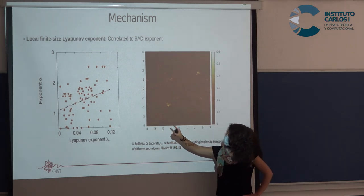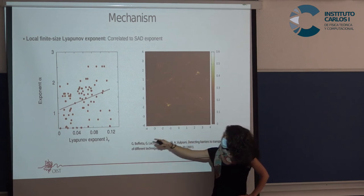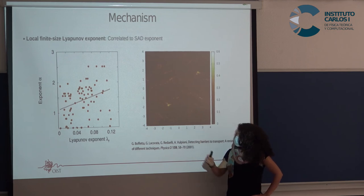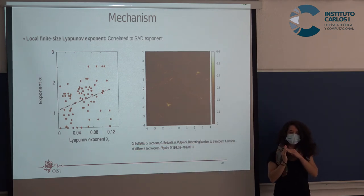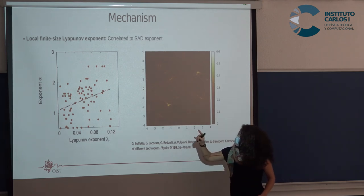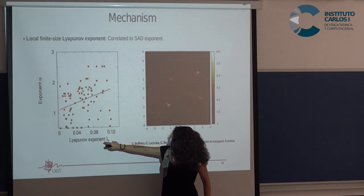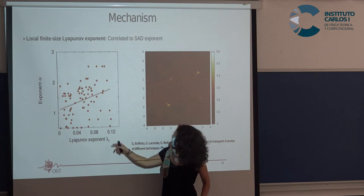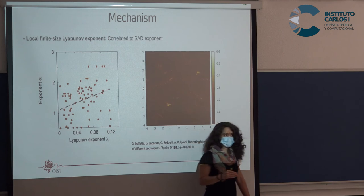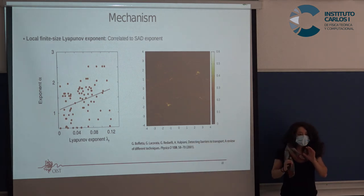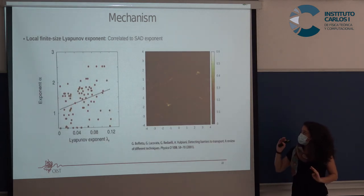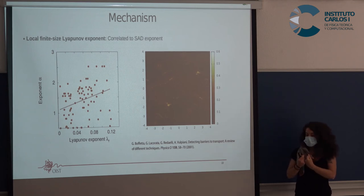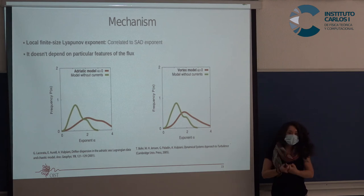We measure the species abundance distribution exponent for each point in space and compare it with the Lyapunov exponent for that particular point. The Lyapunov exponent tells us that our sample is more spatially limited. What we see is a positive correlation: the higher the Lyapunov exponent (or limitation), the higher the exponent of the species abundance distribution. This correlation has a statistically significant p-value.